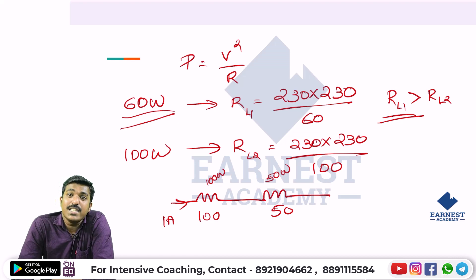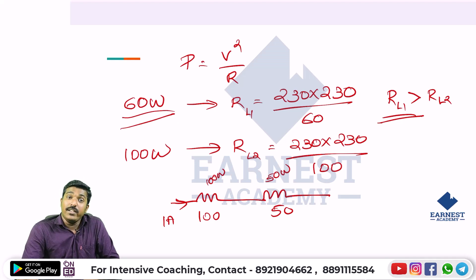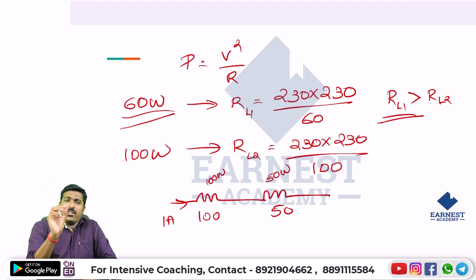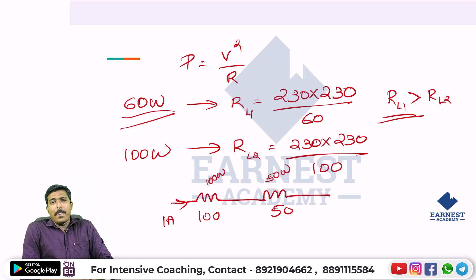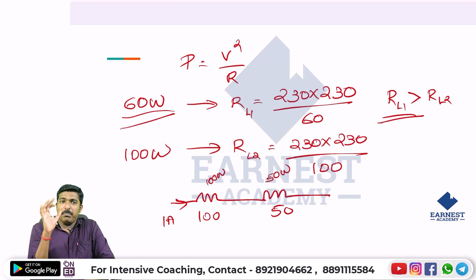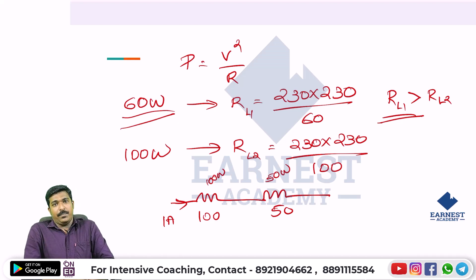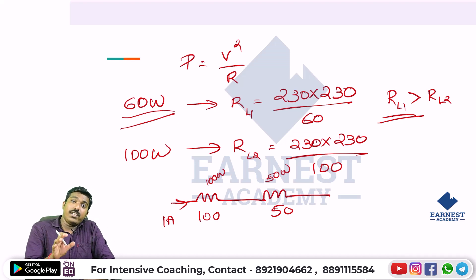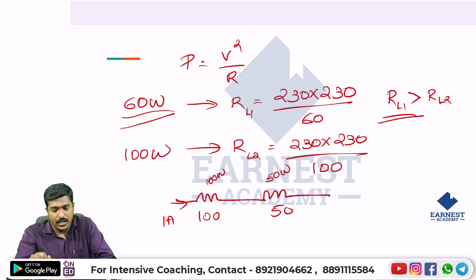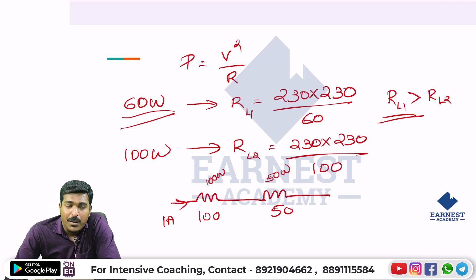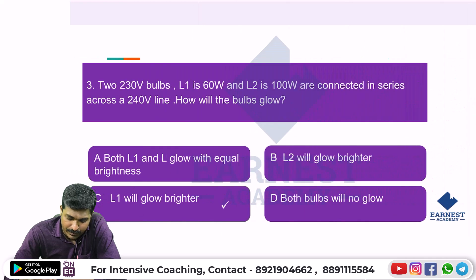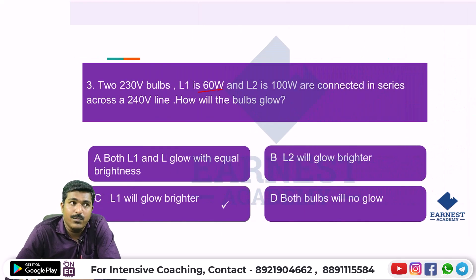Since the two bulbs are connected in series and the 60W bulb has higher resistance than the 100W bulb, the 60W bulb will glow brighter because higher resistance produces more power in a series circuit. L1 (60W) is brighter.